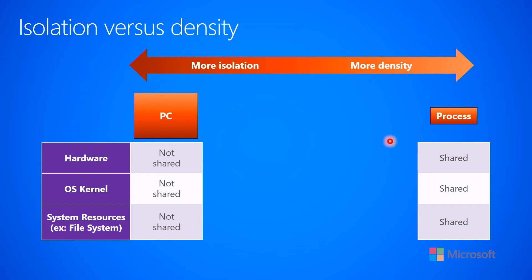Another thing you could do is have a single PC and run a bunch of services on it, each one in their own process. When you run them as their own process on a single PC, they are all sharing the hardware with each other. So if one process is using a lot of network bandwidth or hard disk drive, that takes resources away from the other processes. The operating system kernel is shared by all those processes, so if one process takes a lot of kernel resources, fewer are available for the others. And the file system and system registry on Windows are all shared — if one process allocates a lot of disk space, there's less available for the other processes.